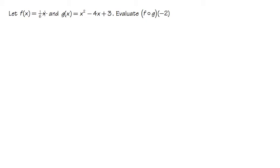For this equation, we have f of x is equal to 1 over 6x, and g of x is equal to x squared minus 4x plus 3. And then we are going to evaluate f of g of negative 2.